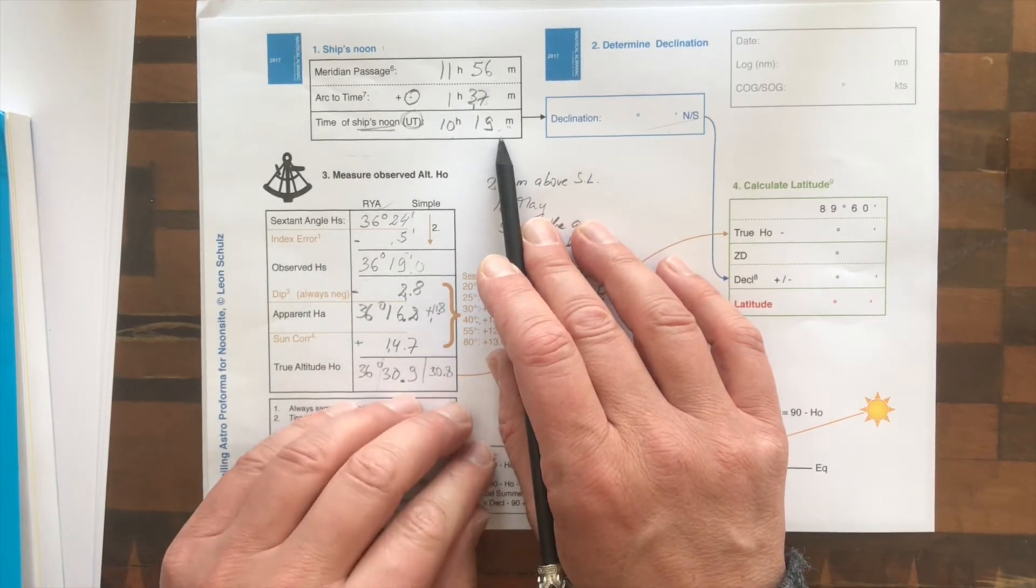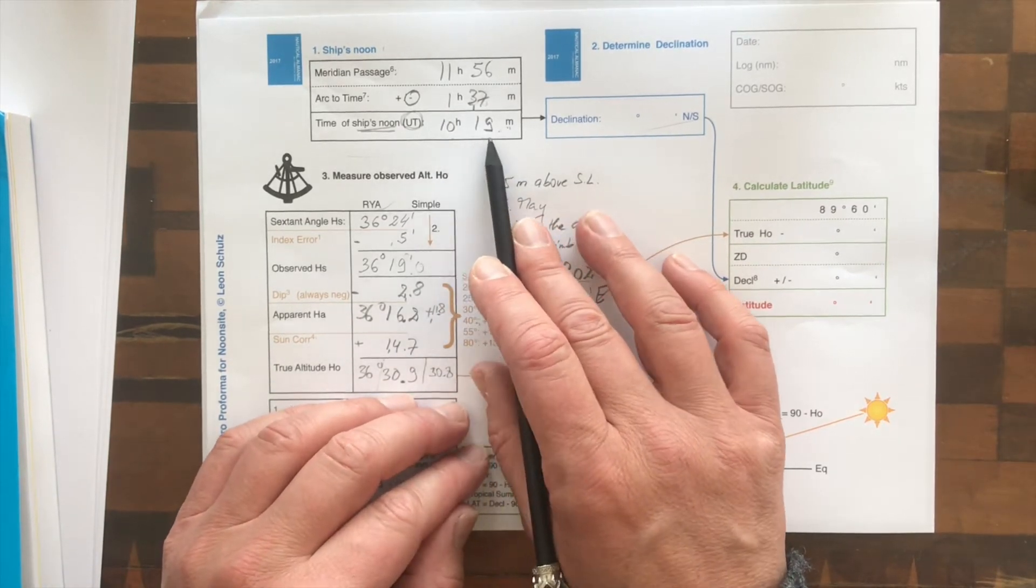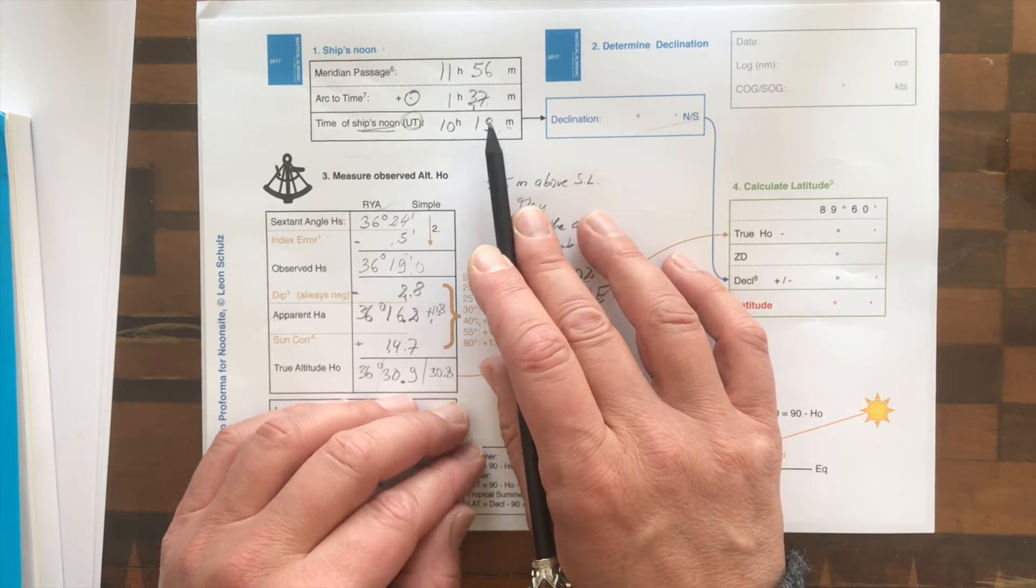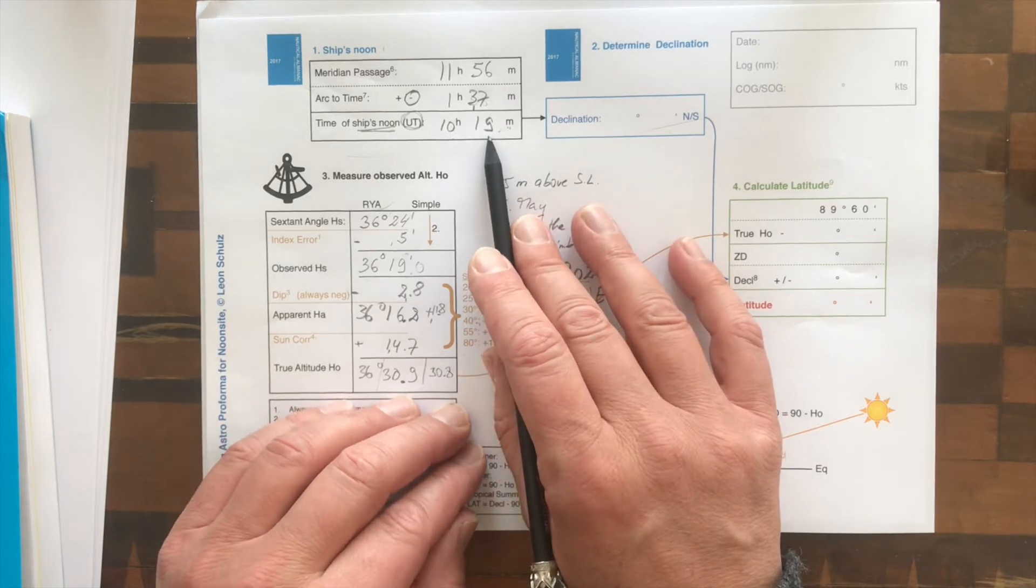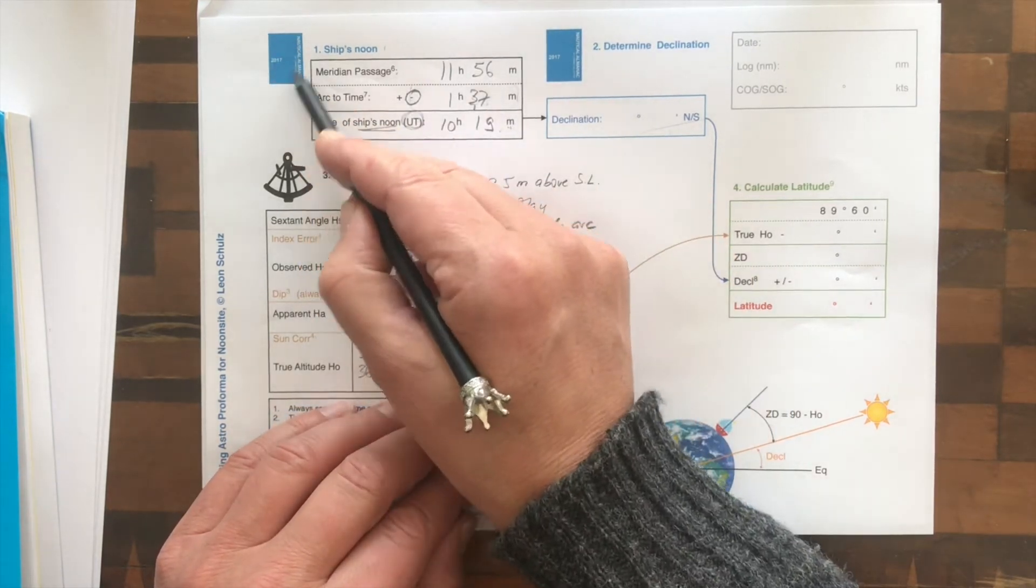So we can go up on deck at, well, maybe a couple of minutes after 10 o'clock UTC, and wait for the sun to get to the zenith. So this information we got out of the blue book here.